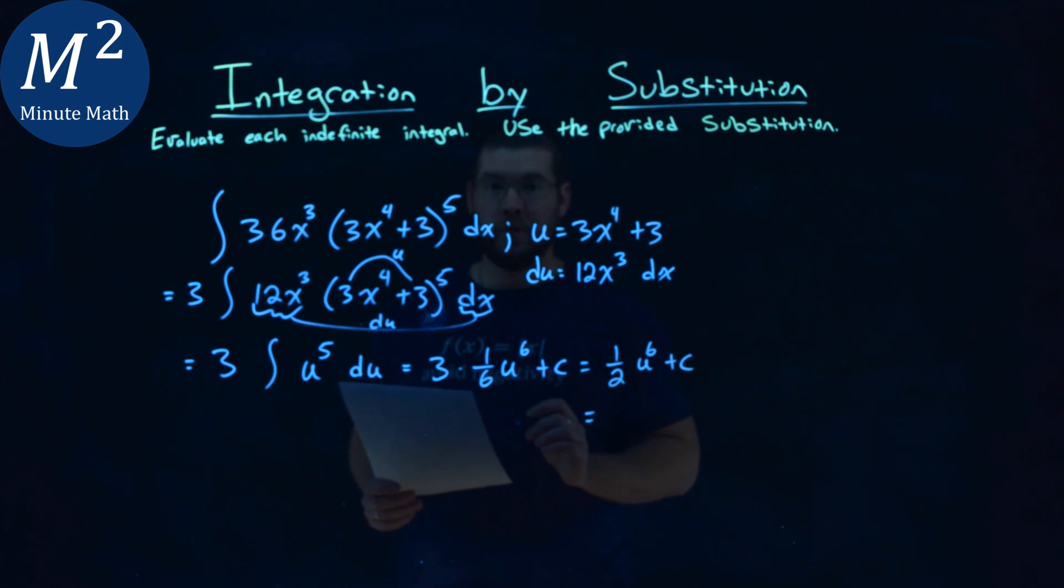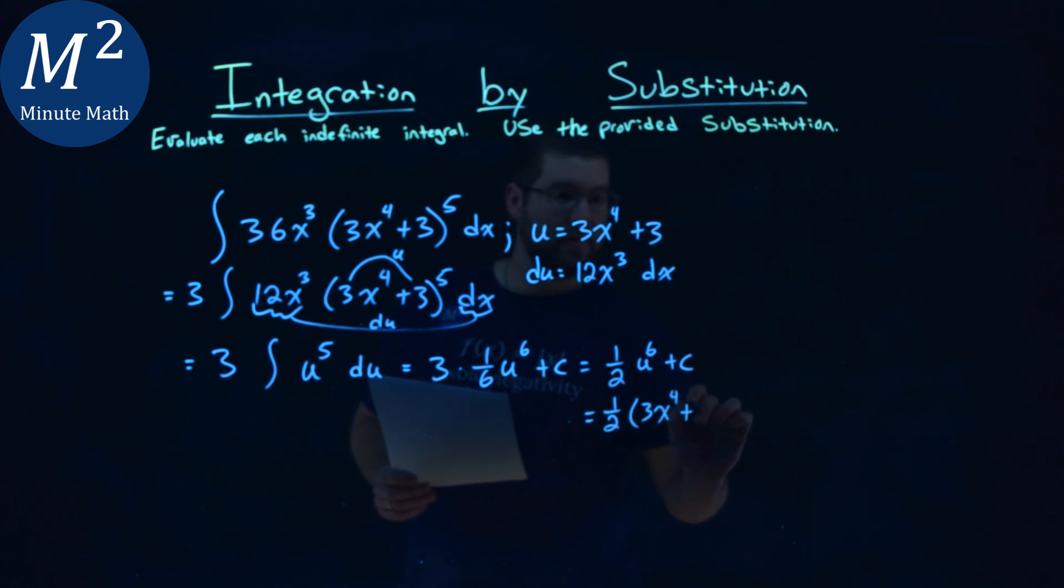And now let's go plug in our u value. Let's bring it back in. 1 over 2, our u value, which is 3x to the 4th power plus 3 to the 6th power plus c.